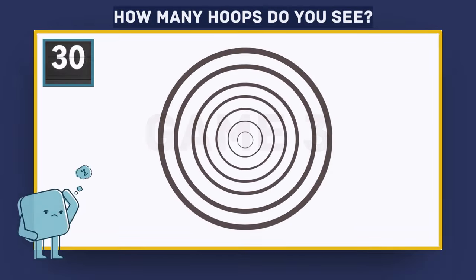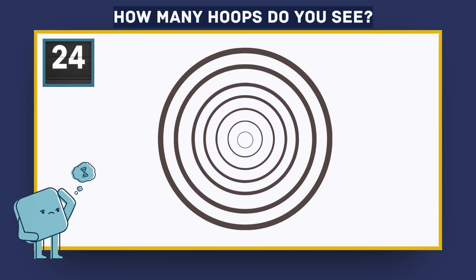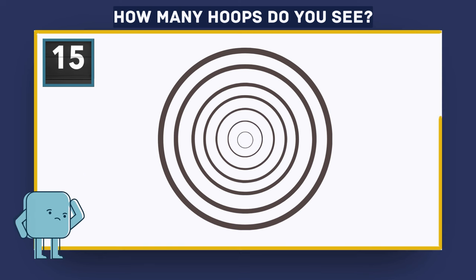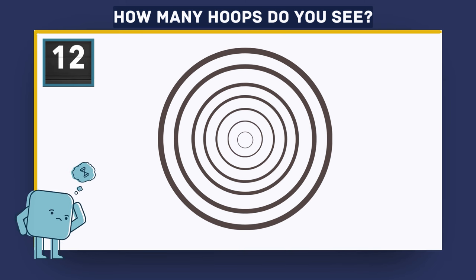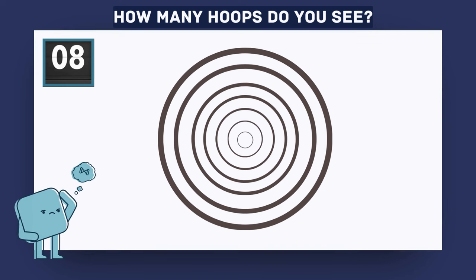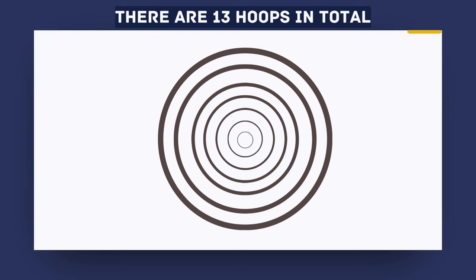Game 3. How many hoops do you see? There are 13 hoops in total.